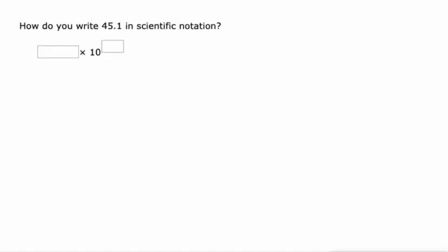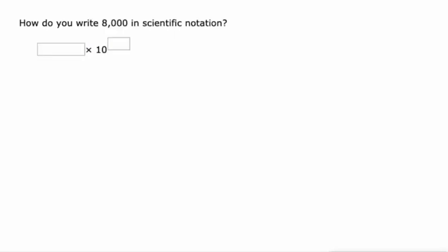Let's do it a few more times. So let's move the decimal place left one spot and make this 4.51. So I would have to multiply 4.51 by 10 one time to have it equal 45.1. Let's move that decimal place all the way over until it's just to the right of the 8. We would have to multiply 8 by 10 three times for it to equal 8,000.